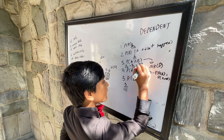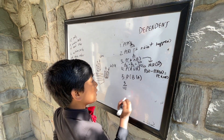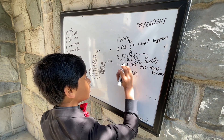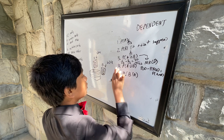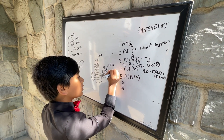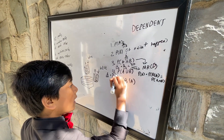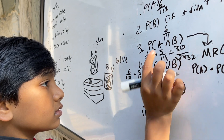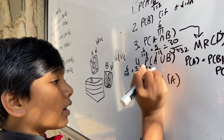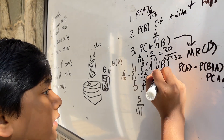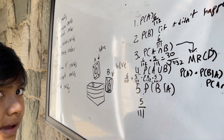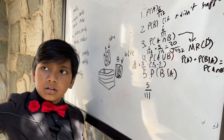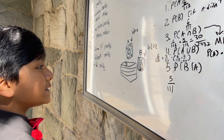So P of A and B is 6 over 112 times 5 over 111. For P of A or B, it's the same addition rule — just this time we use the dependent multiplication result. P of B considering A we already covered — those are our five questions answered for dependent events.